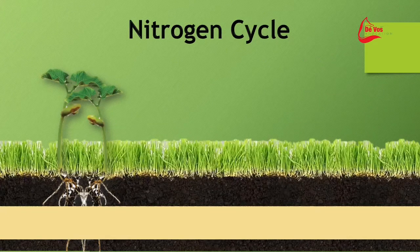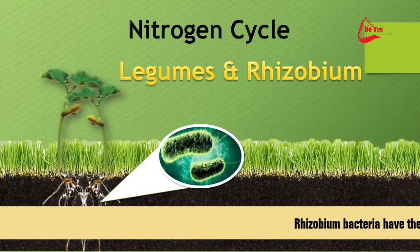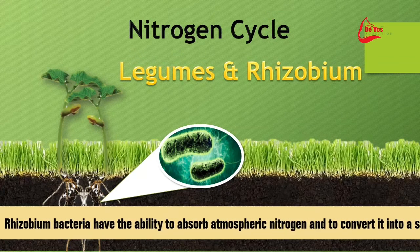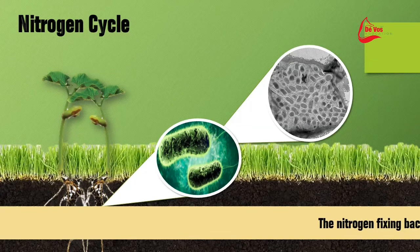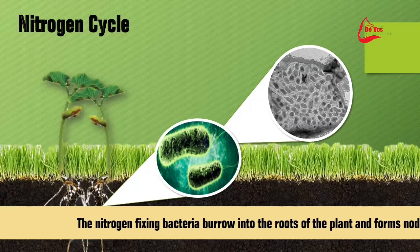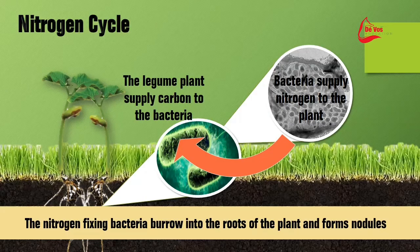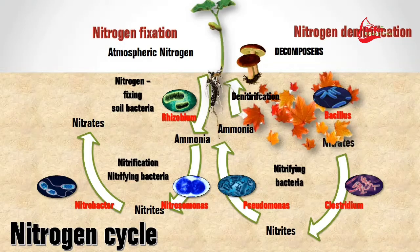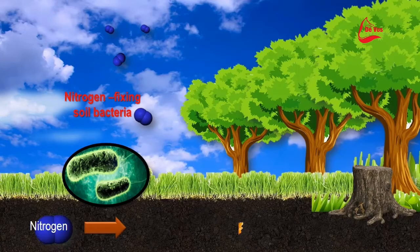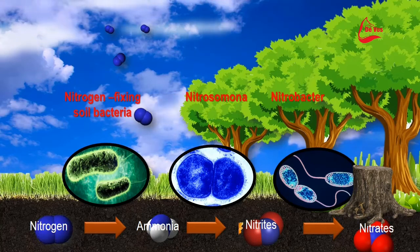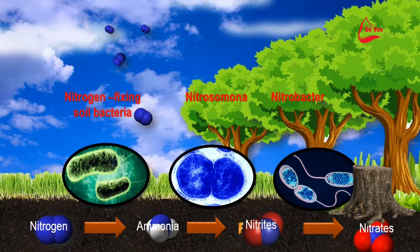Nitrogen makes up most of the gas in the atmosphere, about 78%. Nitrogen is important to living organisms and is used in the production of amino acids, proteins, and nucleic acids. But the nitrogen gas present in air is not directly available to organisms — it first has to be turned into an absorbable form. Root nodule bacteria plays an important role by fixing the nitrogen from the atmosphere into a form that plants can absorb. This is where nitrogen fixation takes place. Nitrogen-fixing soil bacteria turns nitrogen into ammonia, Nitrosomonas takes the ammonia and turns it into nitrites, and Nitrobacter turns it into nitrates that can be absorbed.